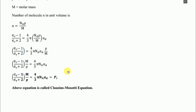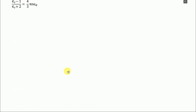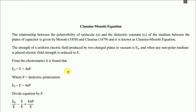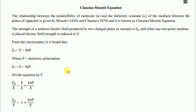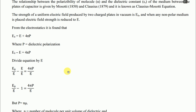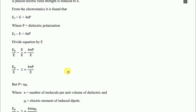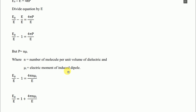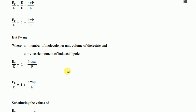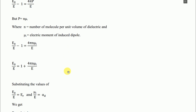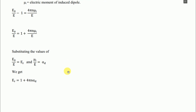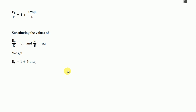Let me revise all the steps. First, we started with E0, then got E0/E. We placed P = n·μᵢ and got E0/E = 1 + 4πn·μᵢ/E. Then we substituted E0/E = εᵣ and μᵢ/E = αd, giving εᵣ = 1 + 4πn·αd. That was Part 1.